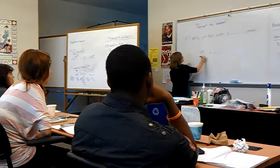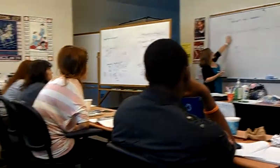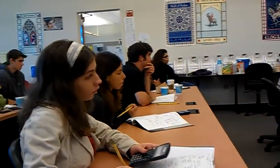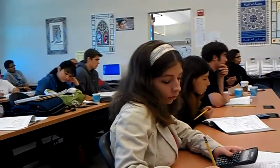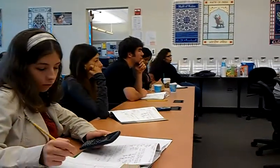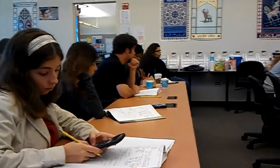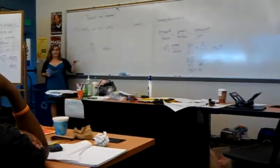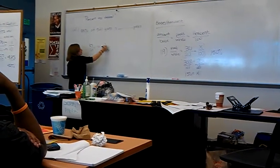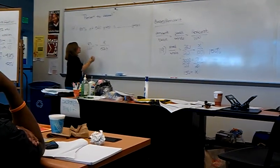Because any time you see a percent, it's always over 100, right? So that gives you one of them right away. So 520 is the whole, because there are 520 guesses total, and we're trying to find 85% of that 520. So the x goes here.